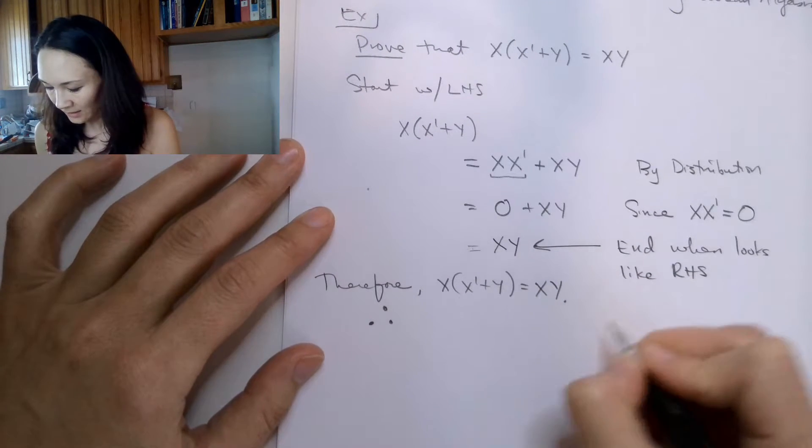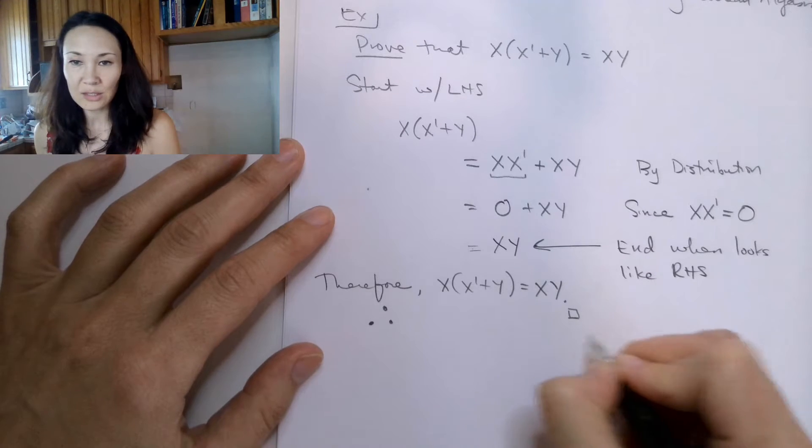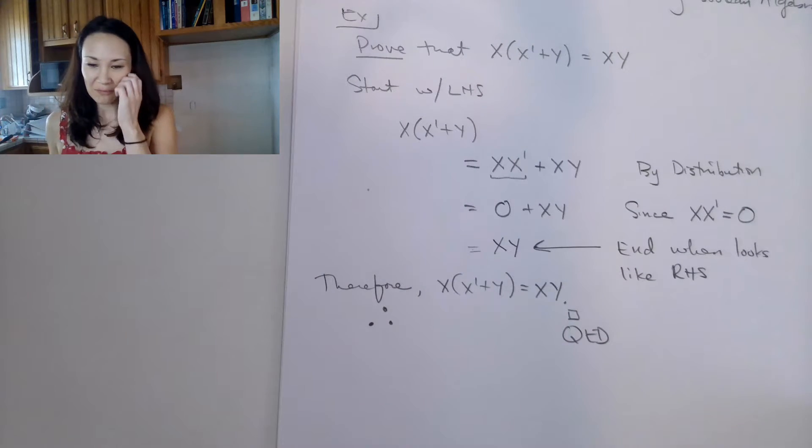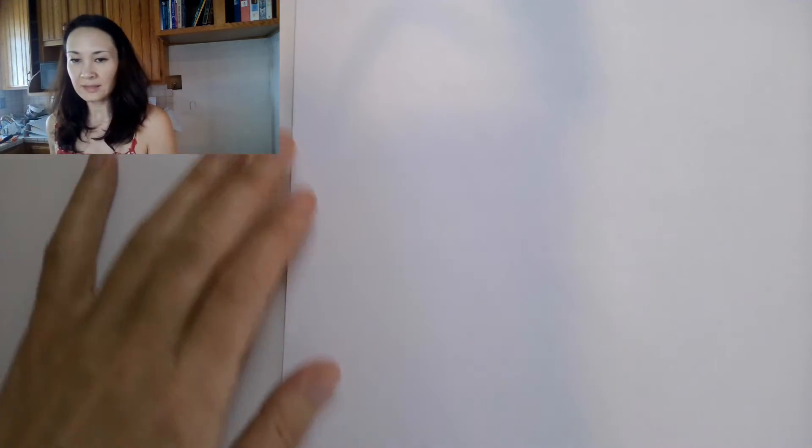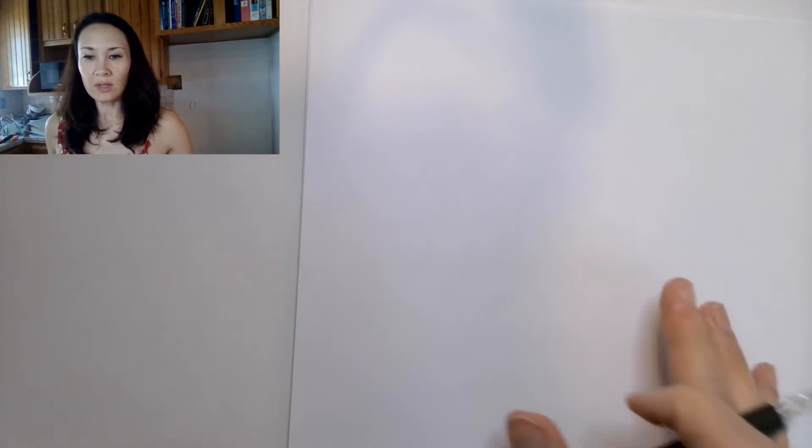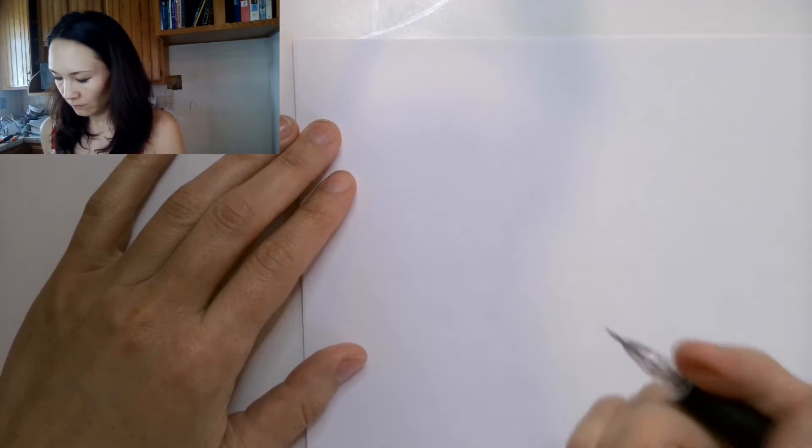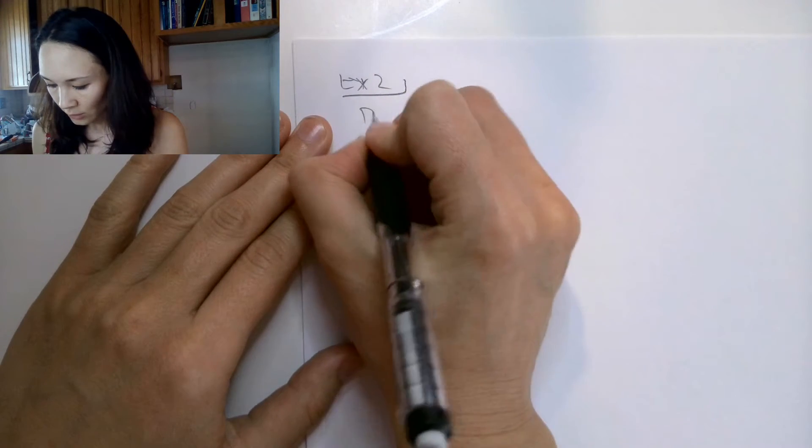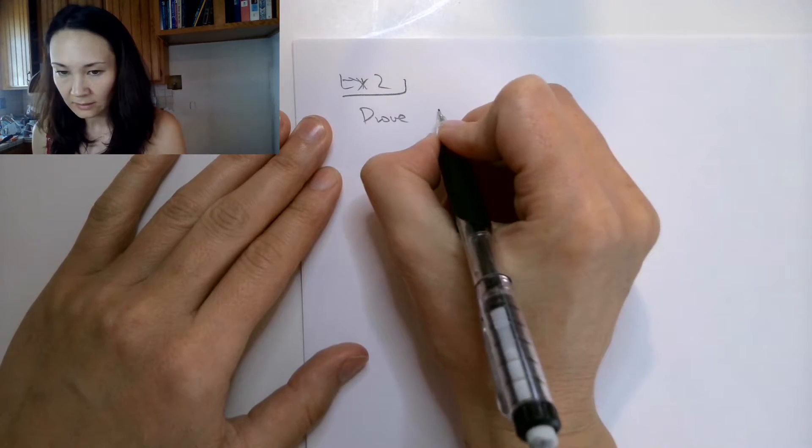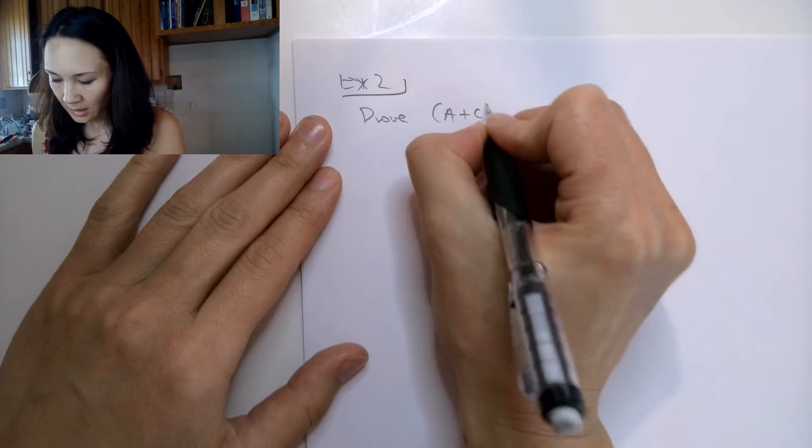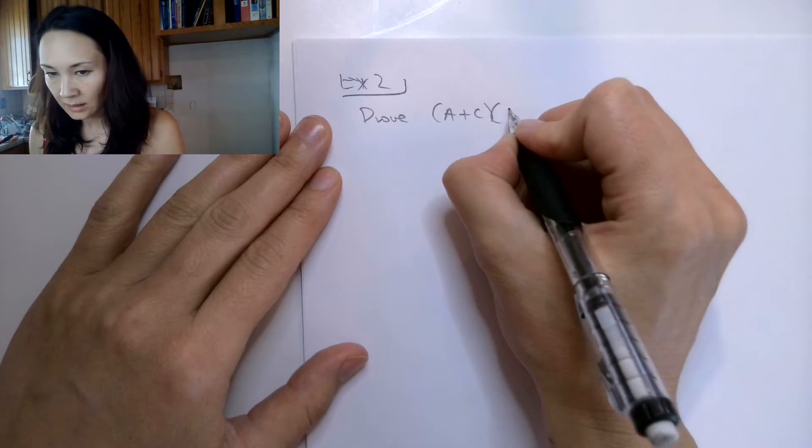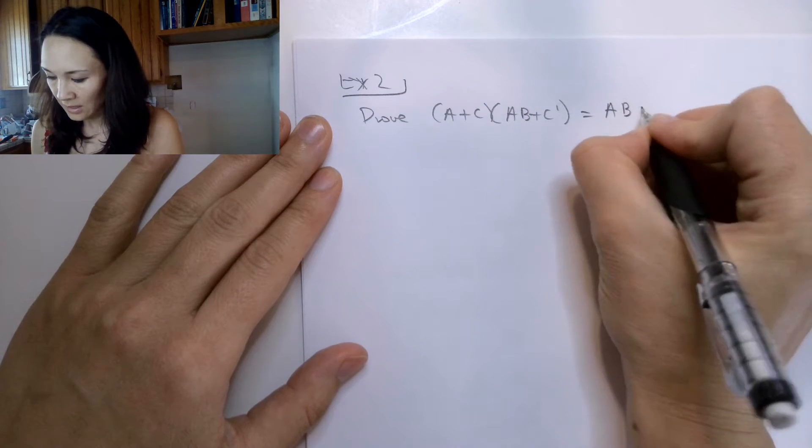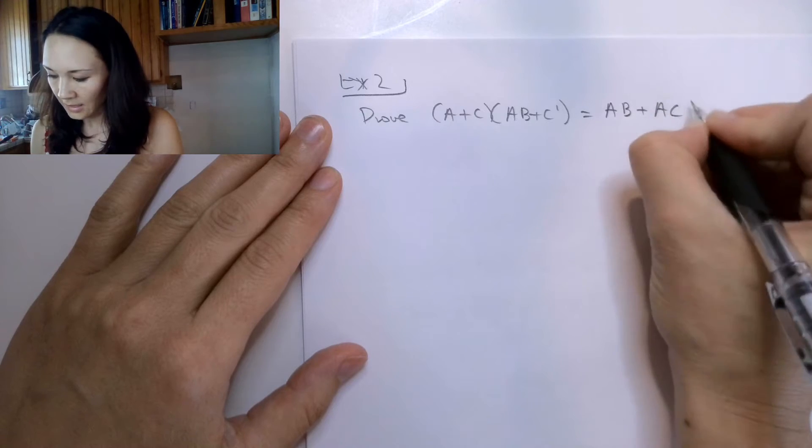And then at the end of this, if you want, you can put a little box, that means your proof is complete, or you can say something like QED, that's just kind of for fun. So let me show you another example. Let's do a second proof. Suppose we have example two, we're asked to prove that A or C ended with A, B or C naught is equal to A, B or A, C naught.